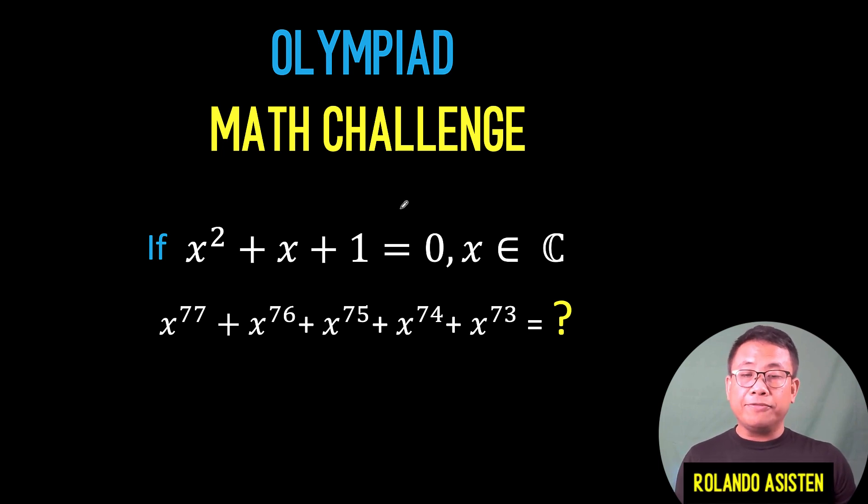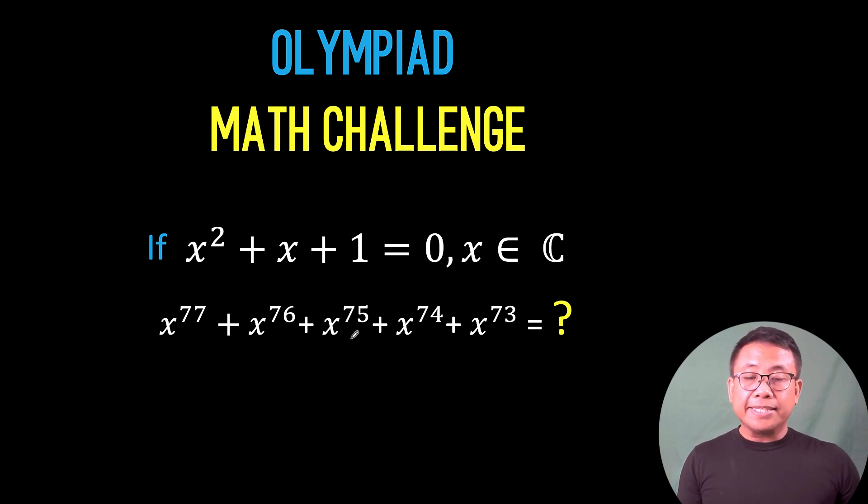Hi everyone, here's our math problem for today. One of our followers from the Philippines wants us to discuss how to solve this Math Olympiad problem. If x² + x + 1 = 0, and x is an element of the set of complex numbers, then find the value of x^77 + x^76 + x^75 + x^74 + x^73.